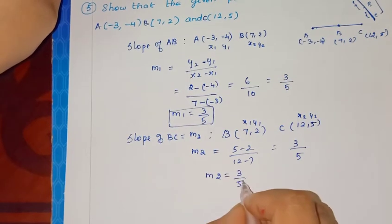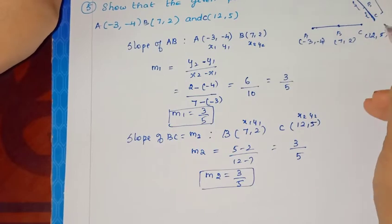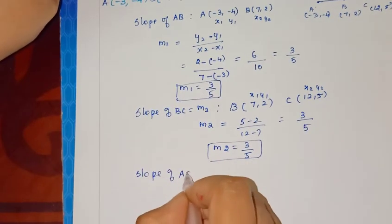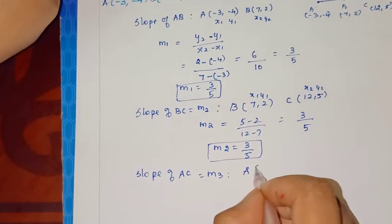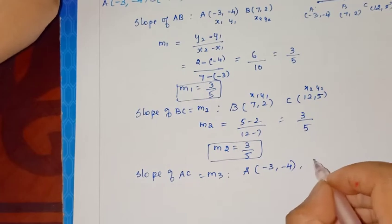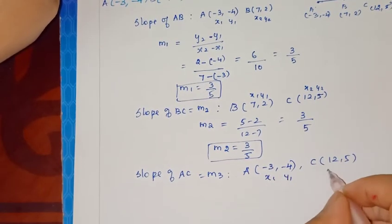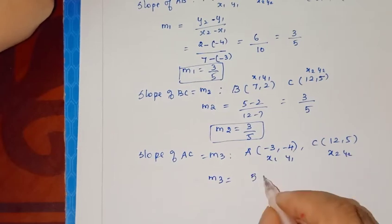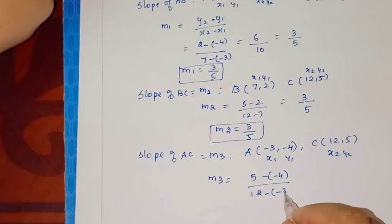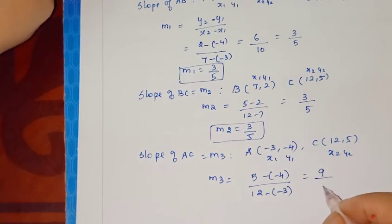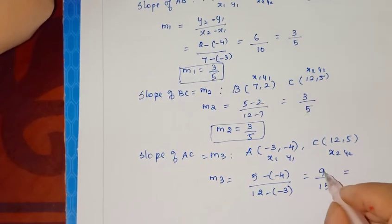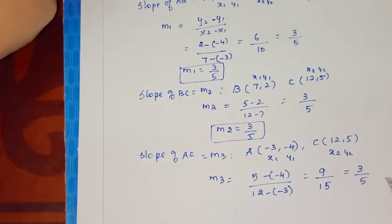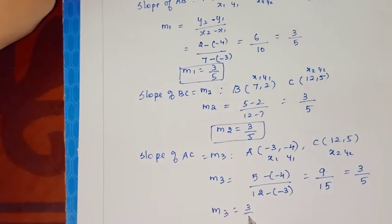Now we have one more slope, AC. Slope of AC equals m3. A is the point (-3, -4), C is the point (12, 5). So this is x1, y1, this is x2, y2. m3 equals y2 minus y1, 5 minus (-4), by 12 minus (-3). So 9 by 15. 12 plus 3 is 15. Simplifying using 3 table: 3 threes are 9, 5 threes are 15. So m3 equals 3 by 5.